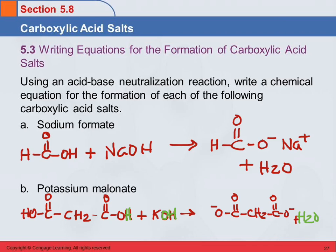There's a potassium ion on each end. To balance this equation, we need to place a coefficient of 2 in front of the potassium hydroxide, and we end up with 2 water molecules as well. The second carboxylic acid group also carries an acidic hydrogen.